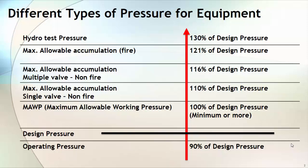Hydro test pressure is calculated based on the equation given in the construction code of the equipment. In the case of ASME, hydro test is normally 1.3 times your design pressure. If you are going to do a pneumatic test, it will be 1.1 times your design pressure. Hydro test pressure is the maximum pressure that your equipment will undergo throughout the life of the equipment.